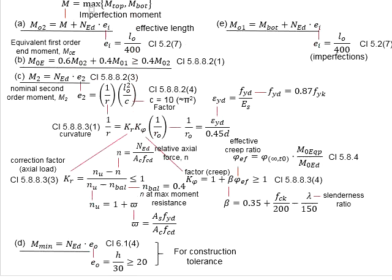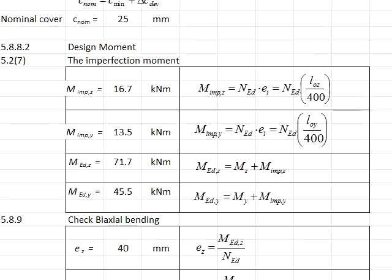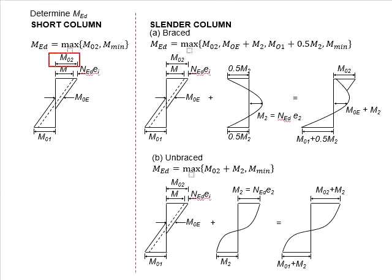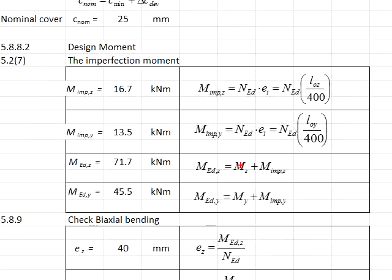MEd times ei. The ei is given in the formula here, which is equal to the effective length divided by 400. Now, we need to determine the imperfections moment due to the NEd times ei for both y and z axes. Since the moment due to the imperfections is governed by their respective effective length, and the effective length for the y and z axes are different, the moment due to the imperfections will be different. The M02 will be equal to the bending moment plus the moment of imperfections for both axes, which is the summation of Mz or My with the moment of imperfections. That gives you these two values.